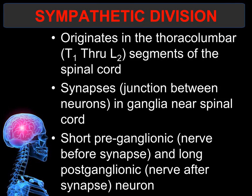The sympathetic division originates in the thoracolumbar segment of the spinal cord, from the levels of thoracic one to the second lumbar area. They synapse near the spinal cord. Remember, a synapse is a junction — it could be between two neurons, or between a neuron and a muscle, a neuron and a gland, or an organ. A ganglia is a bulge in the nerve where there is a collection of cell bodies. Cell bodies contain the dendrites which connect to other nerves, so that is where the synapse occurs.